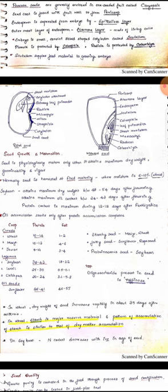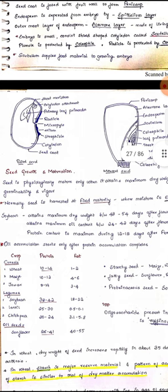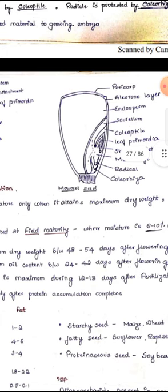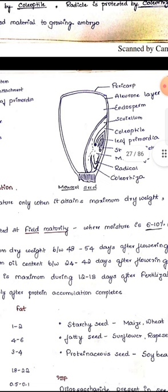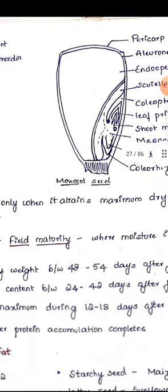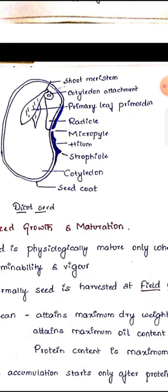Endosperm is separated from embryo by epithelial layer. Outermost layer of endosperm is aleurone layer that is made up of living cells. Embryo is small, consists of shield shaped cotyledon called scutellum. Scutellum is nothing but small shield shaped cotyledon in embryo. Plumule is protected by coleoptile, radicle is protected by coleorhiza. That means a cap like structure which protects the plumule is called coleoptile and the cap like structure which protects the radicle is called coleorhiza. Scutellum supplies food material to growing embryo. Now the seed growth and maturation part. Here there is one dicot seed and one monocot seed and these are well labeled. In monocot seed you can find this is generally a typical maize seed. Pericarp is the outermost layer then followed by aleurone layer just below the pericarp. Then endosperm is the food storing part, then scutellum is formed inside the embryo. Coleoptile, leaf primordia, shoot primordia, mesocotyl, radicle and coleorhiza. In case of dicot seed, shoot meristem and cotyledon attachment, then primary leaf primordia, radicle, micropyle end, then hilum attachment part. Micropyle is the opening from where the water entry will take place, then strophiole, cotyledon and seed coat. This is the typical dicot seed.